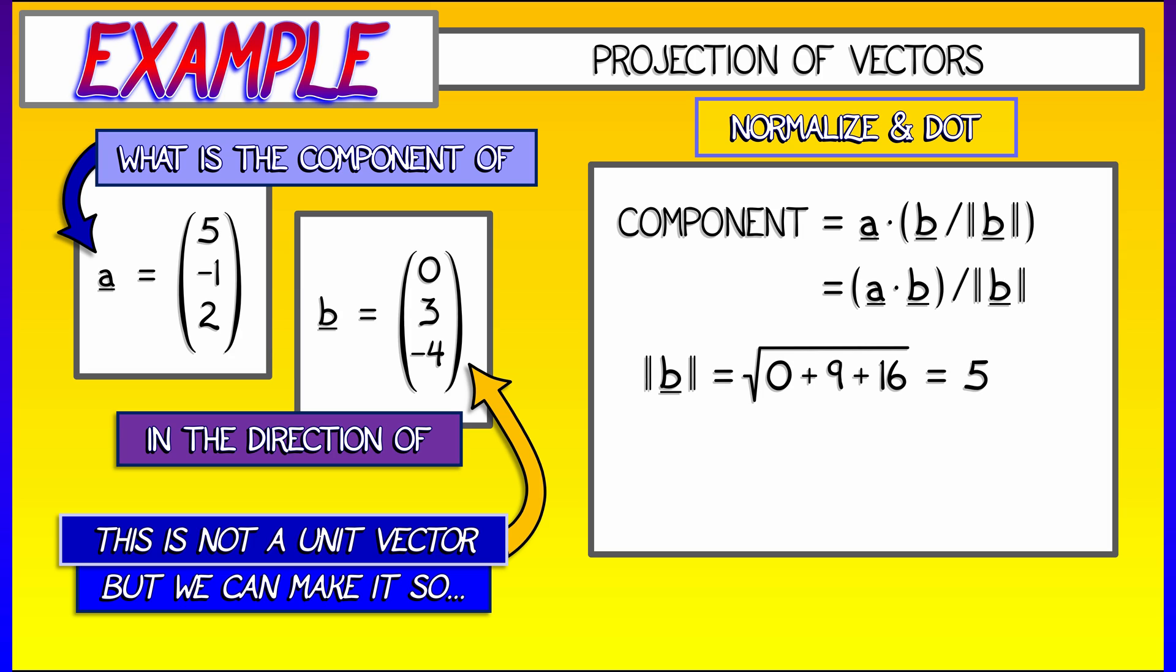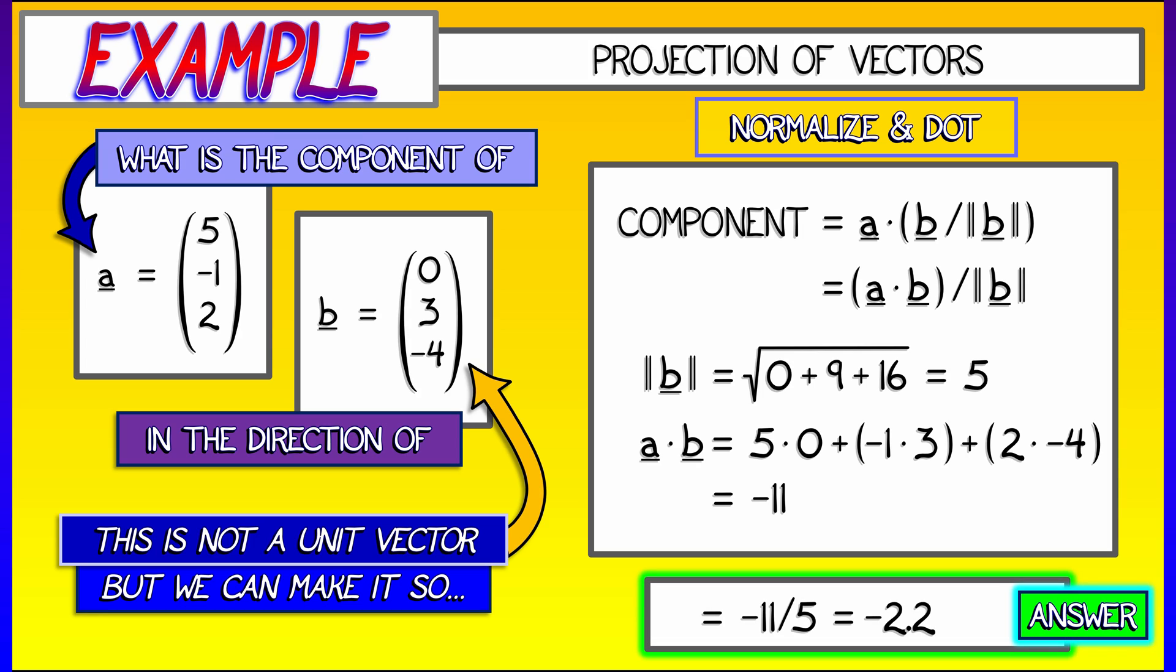Likewise, computing a dot b is simply five times zero plus negative one times three plus two times negative four, which is negative 11, giving us a final answer of negative 11 divided by five or negative 2.2.